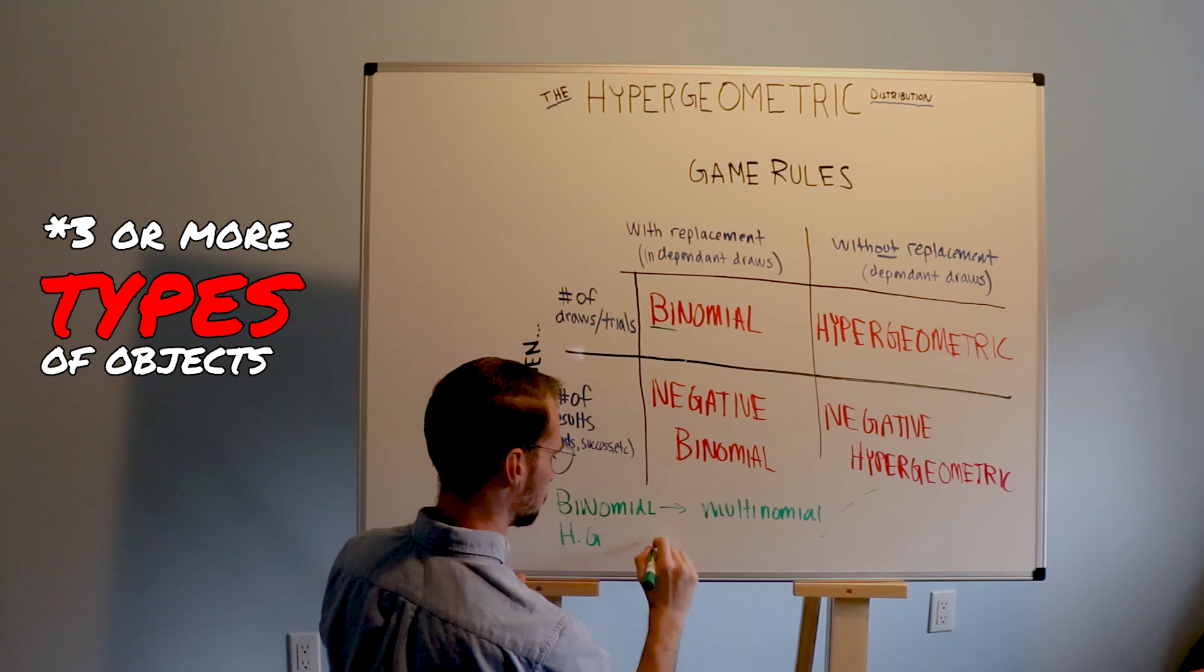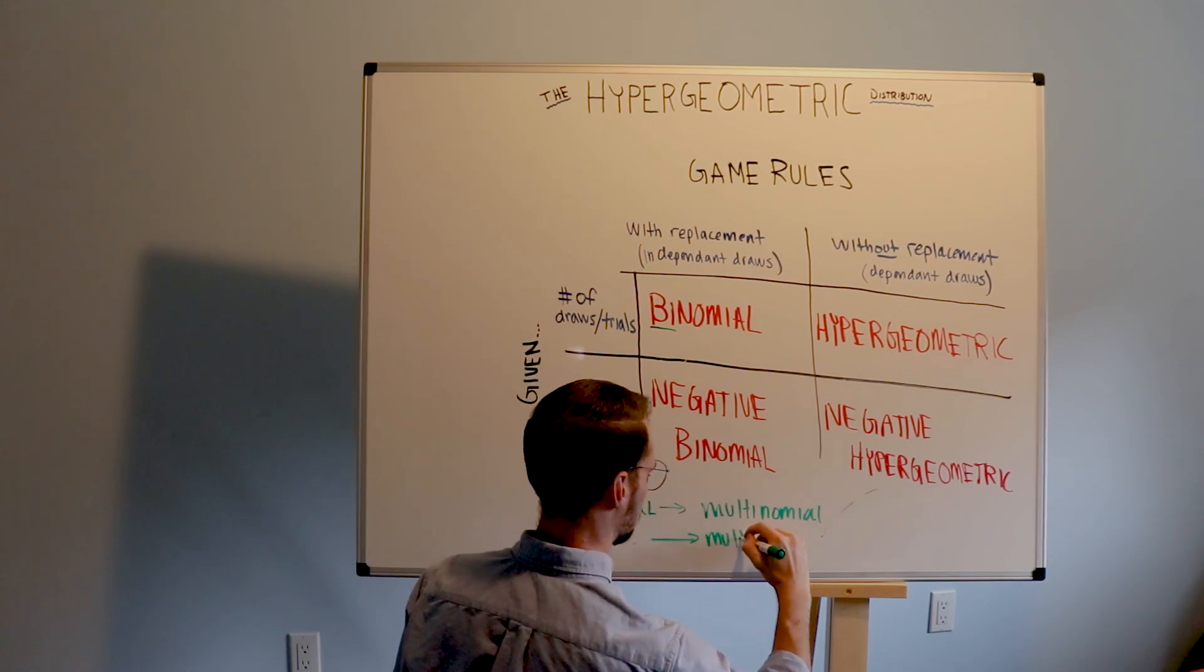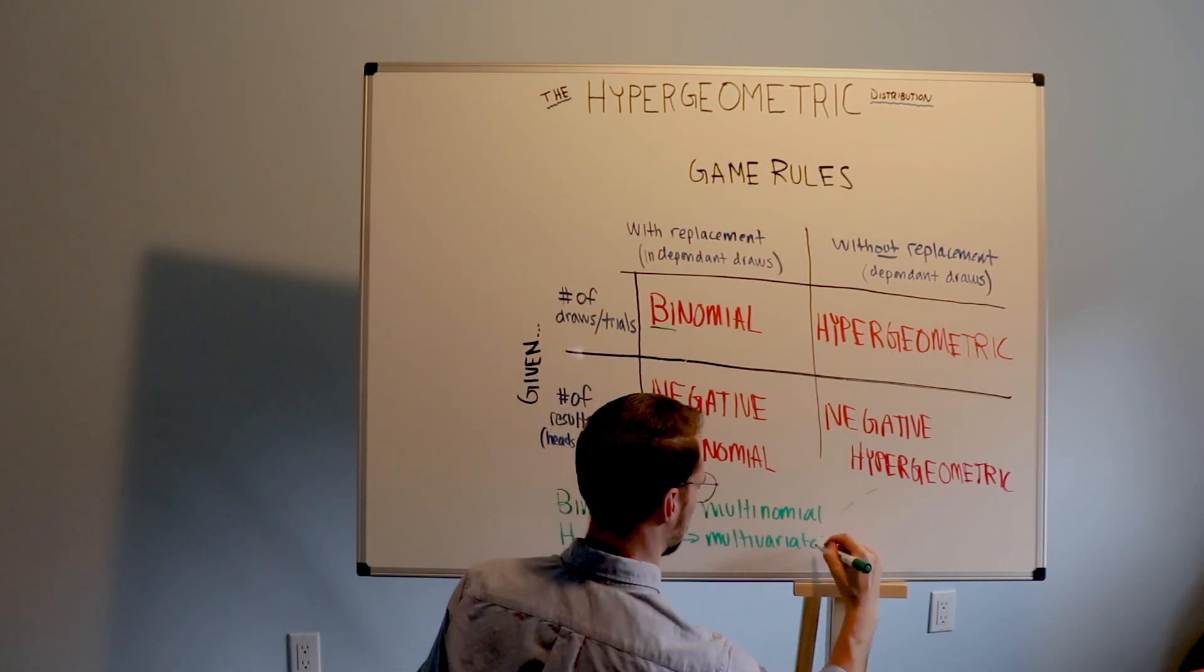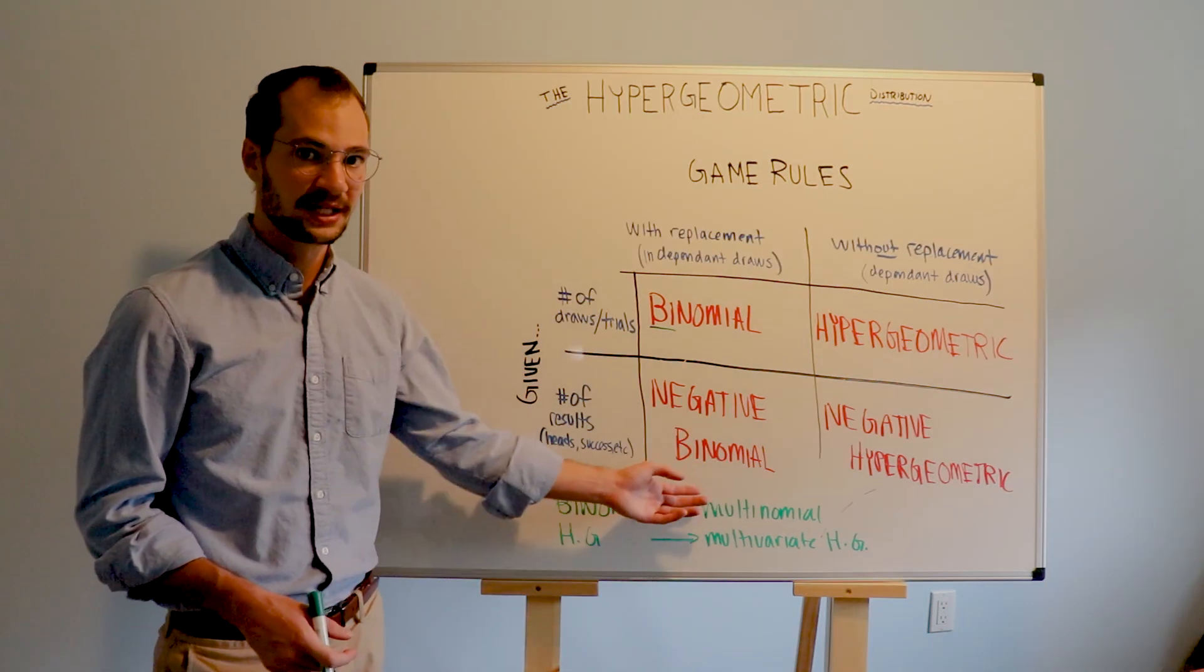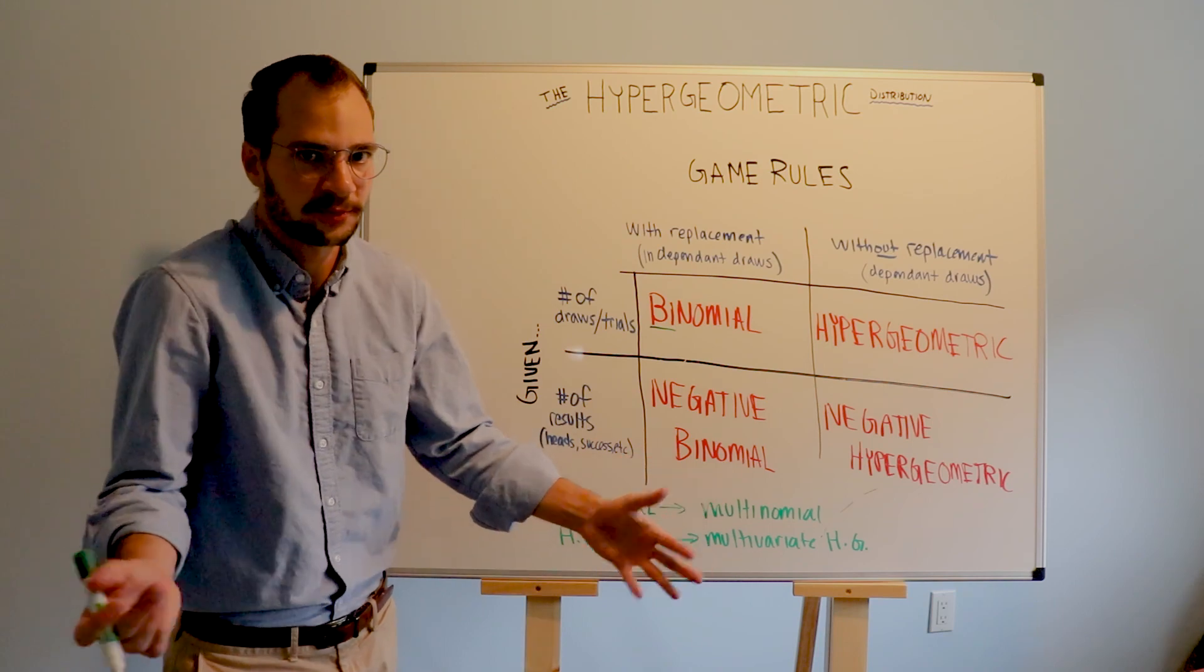Similarly, we can have a multivariate hypergeometric or a multivariate negative hypergeometric distribution. We can understand this because bi means two and multi, of course, means multiple.